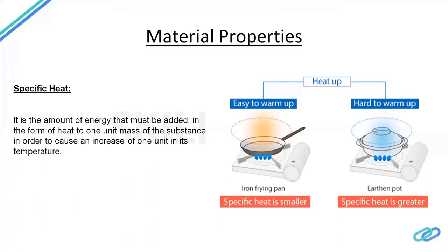Specific heat is another key parameter. When analyzing heat or temperature-related problems, we need to understand the specific heat of the fluid. It is a measure of the energy required to change the temperature of a substance by 1 degree Celsius. This is a very important parameter when understanding how flow changes with respect to temperature.